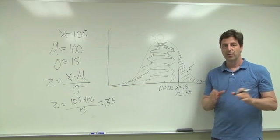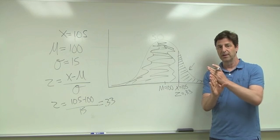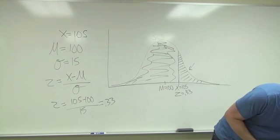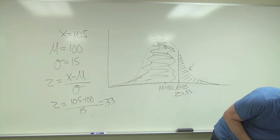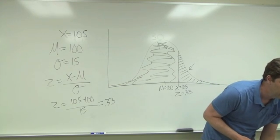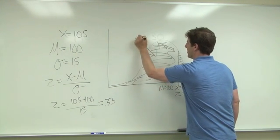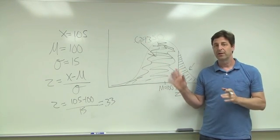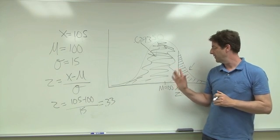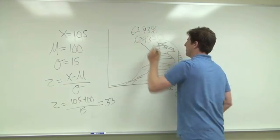So now that we have a z-score, we can look at Appendix A. Remember, in Appendix A what you get is a z-score, and it tells you the proportion of the normal distribution that falls below that z-score. So in Appendix A with a z-score of 0.33, the proportion of the normal distribution that falls to the left of that, or below that, is 0.6293. So in a normal distribution, we would expect 62.93% of the normal population to have a score below 105.